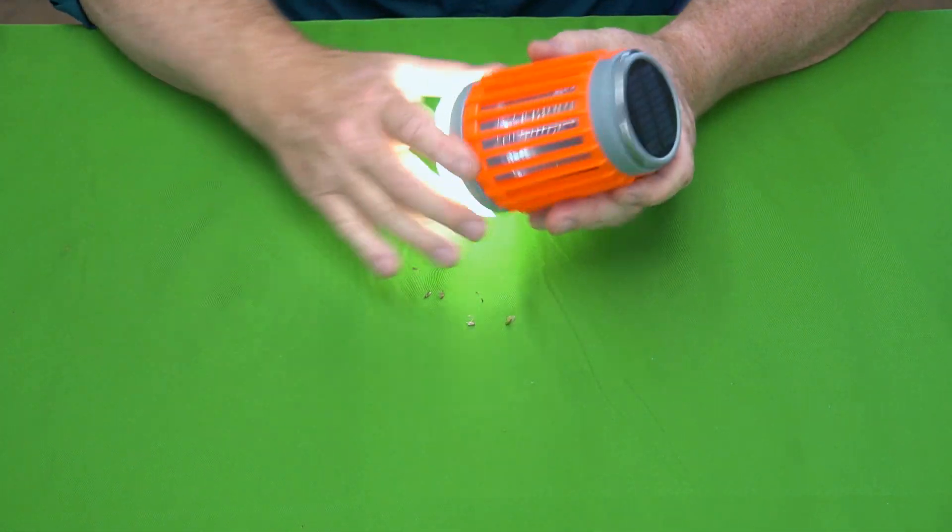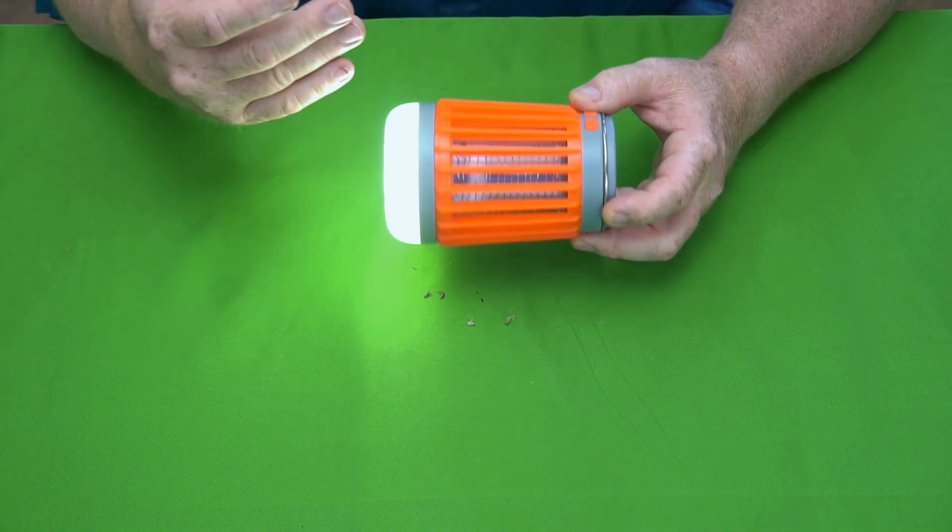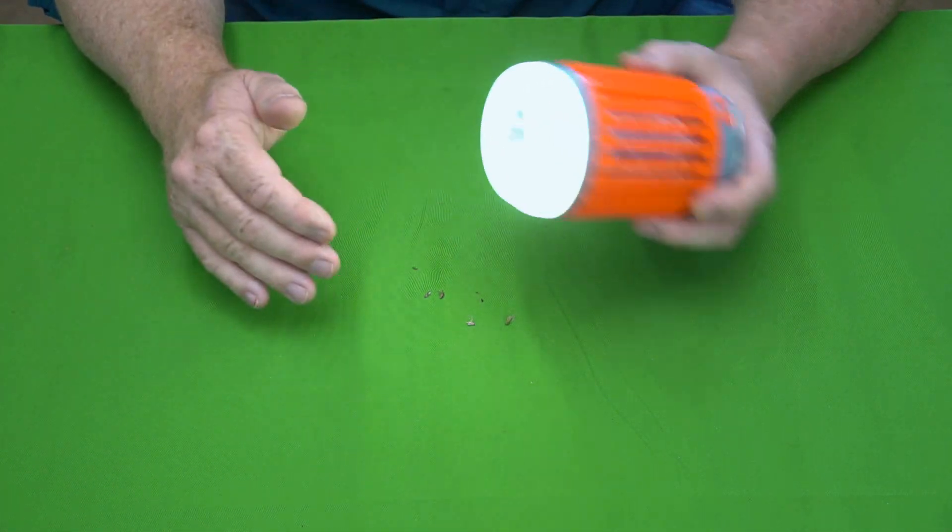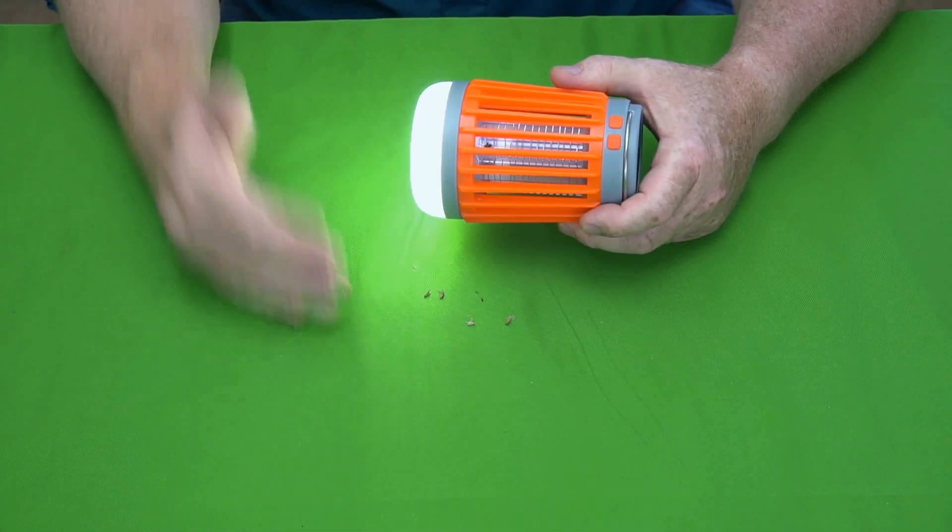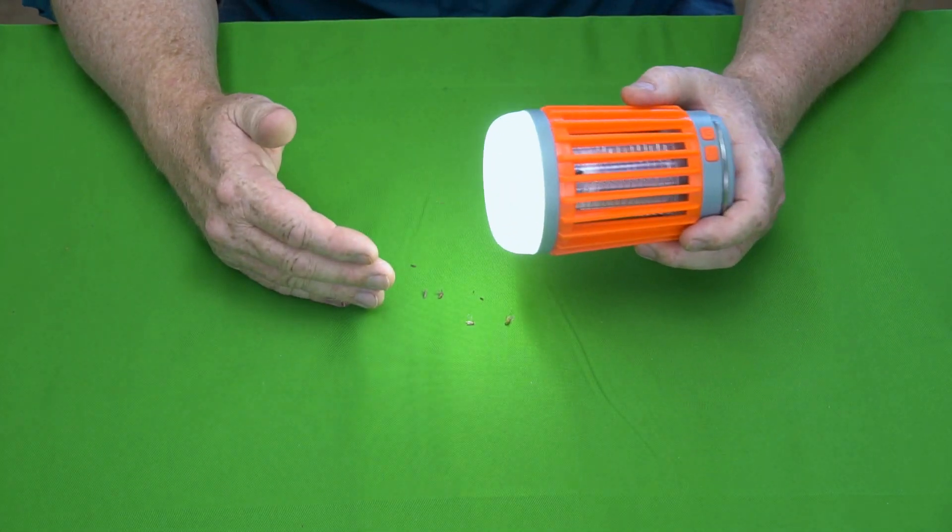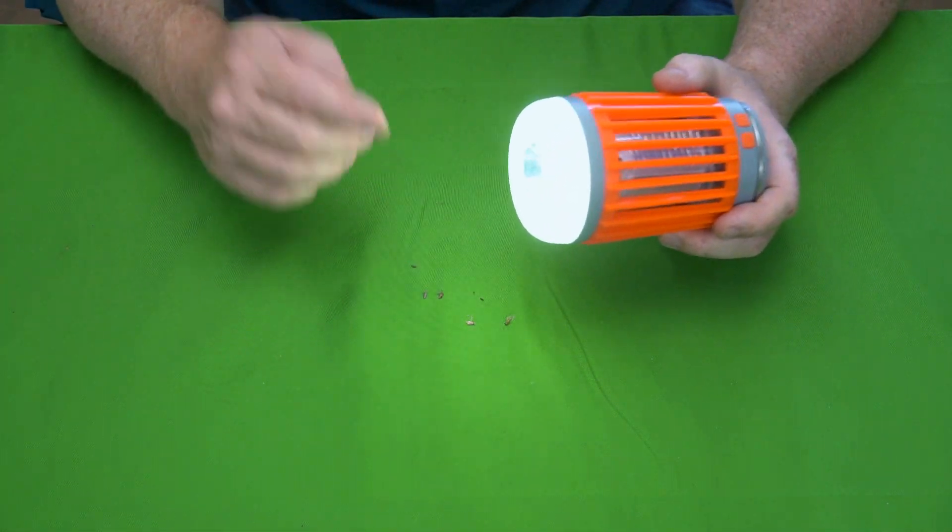So it's not that it's completely useless, but the ad claimed that it would kill all the mosquitoes in a 300 square foot area in six minutes, and that is a complete total lie and fabrication. It doesn't even kill mosquitoes, as far as I can tell. It did kill some bugs, but no mosquitoes.